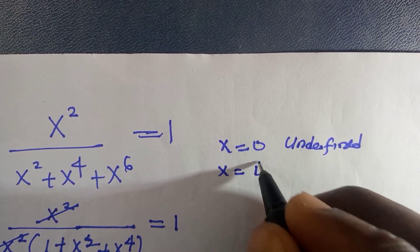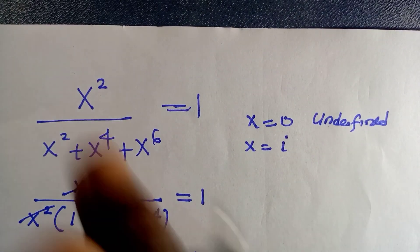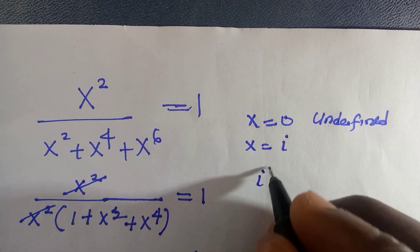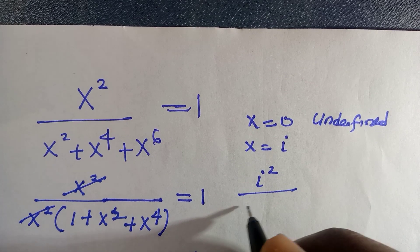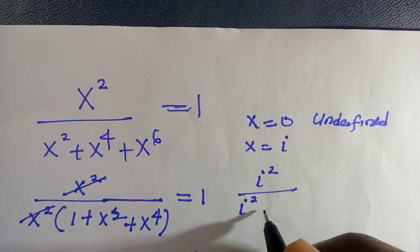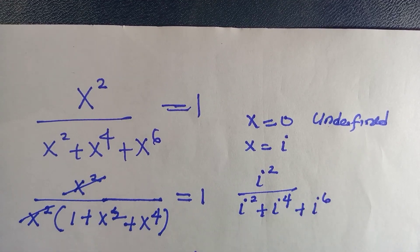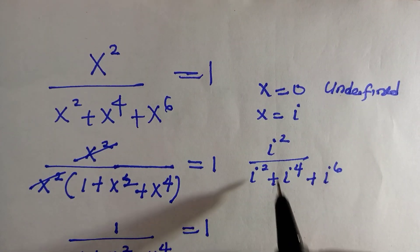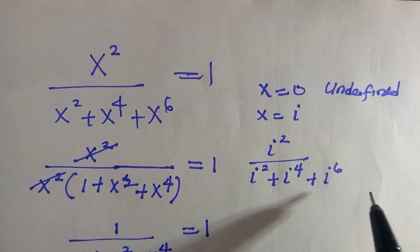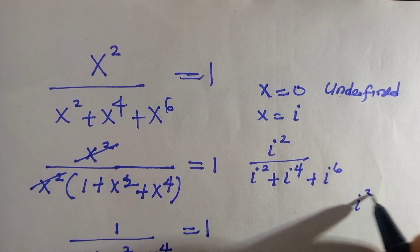And let's test for x equals to i. So, we surely this will work. And we have i squared divided by i raised to the power of 2, plus i raised to the power of 4, plus i raised to the power of 6. But note that i squared is negative 1.